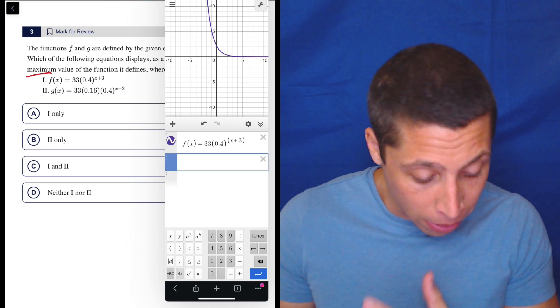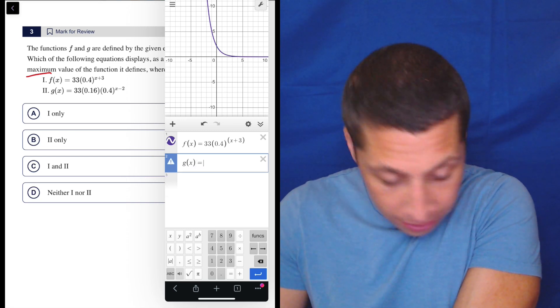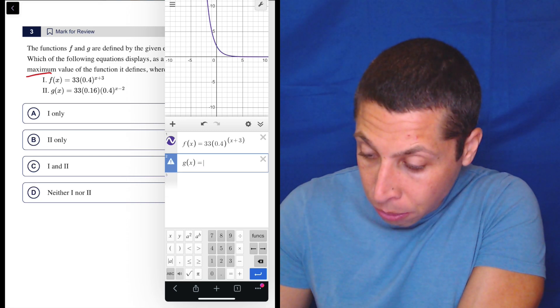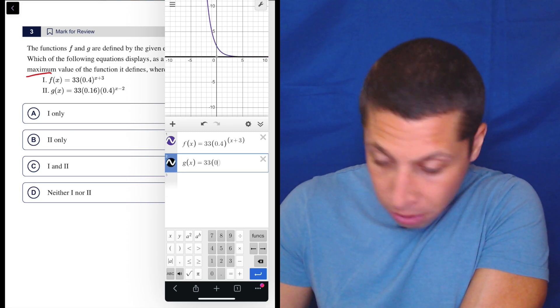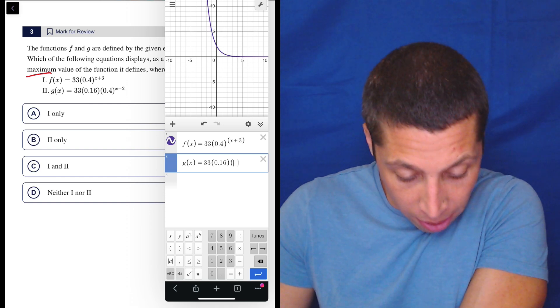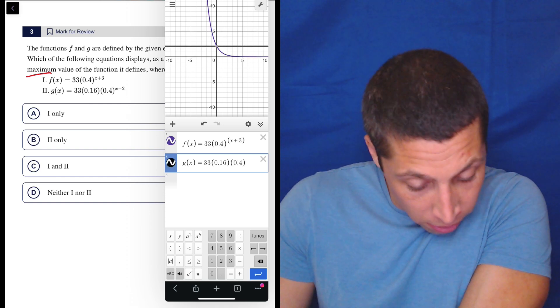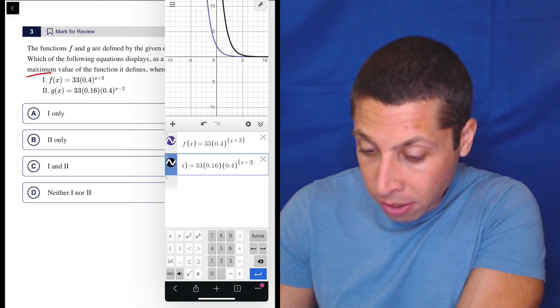That would obviously mess you up, but there you go. And then g of x is equal to just type it all up. So 33 times 0.16 times 0.4 to the parentheses x minus 2.